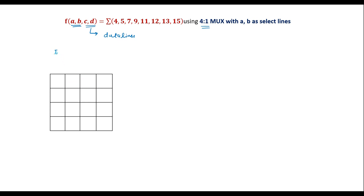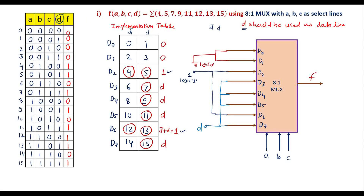Referring to the same truth table: when A, B = 0,0 — there are four possible combinations of C, D: 00, 01, 10, 11. When A, B = 0,1 — again C, D can be 00, 01, 10, or 11. Similarly for A, B = 1,0 and A, B = 1,1, each gives four possible C, D cases.